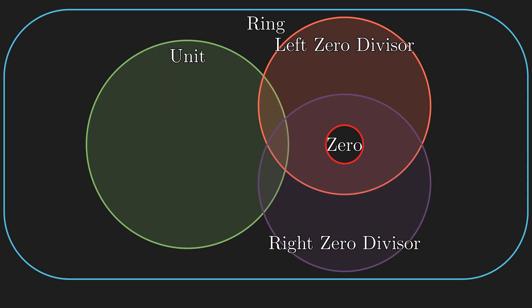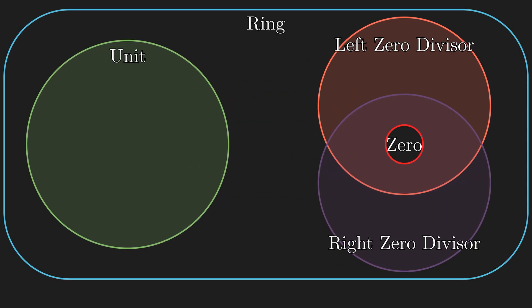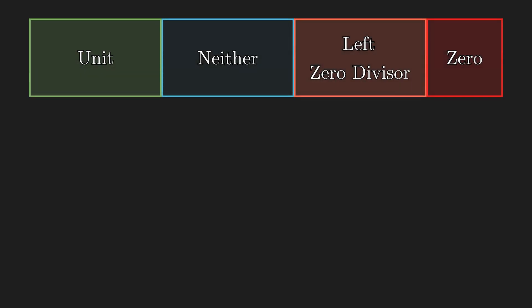So our original assumption that units and zero divisors were separate categories was correct. Now let's rank elements based on how nicely they behave with respect to left divisibility. This time, neither category may contain right zero divisors that are not left zero divisors.